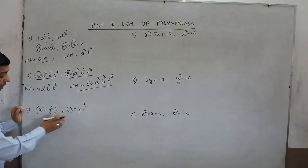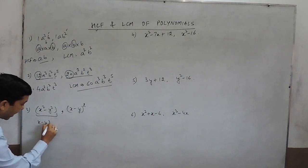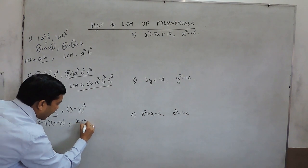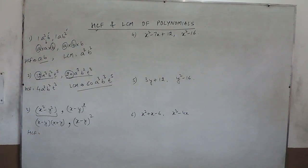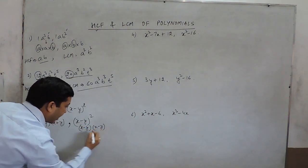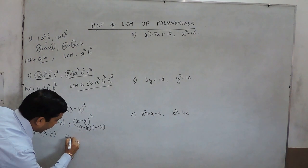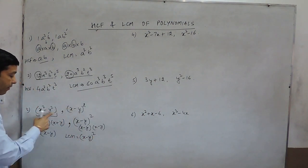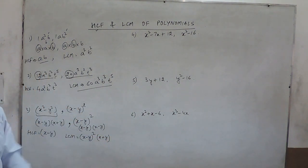When we have terms that can be factorized further, we must first factor them. For example, x²-y² becomes (x-y)(x+y), while (x-y)² can be written as (x-y)(x-y). When finding the HCF, x-y is the common factor in both terms. For the LCM, the highest power of (x-y) is 2, and the power of (x+y) is 1. So the LCM of these two terms is (x-y)²(x+y).